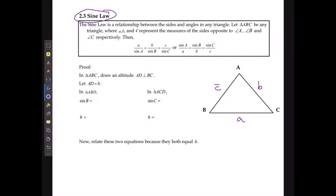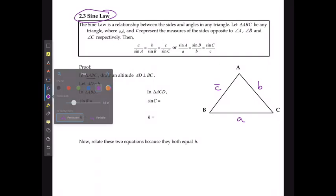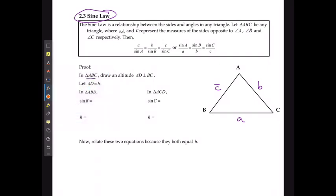In triangle ABC we're going to draw an altitude, creating a new point where we're going to go straight down, forming a right angle triangle. I'm going to call that point, point D. Given point D, the height of this we're just going to refer to as H.